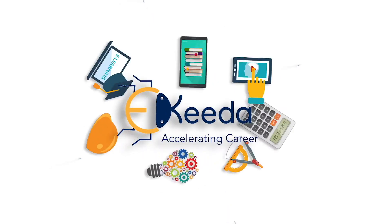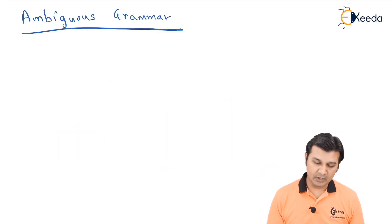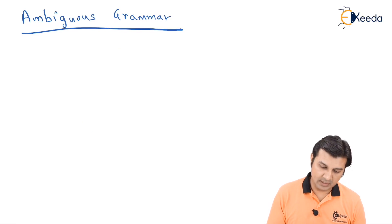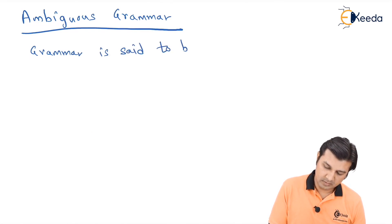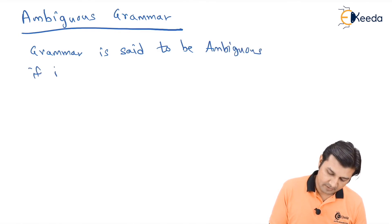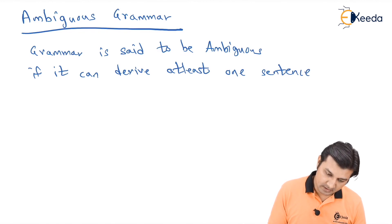Coming on to ambiguous grammar, how do you define an ambiguous grammar? A grammar is said to be ambiguous if it can derive at least one sentence using